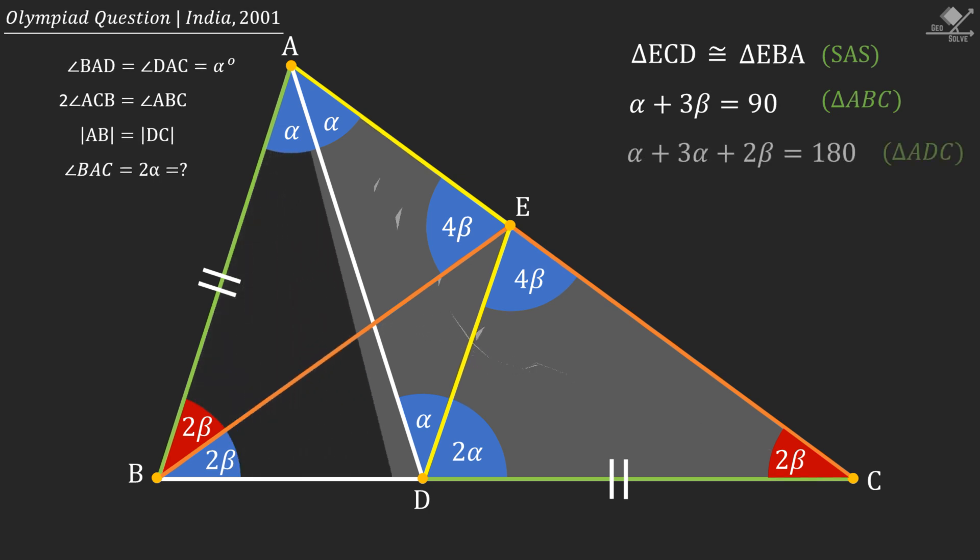From triangle ADC, we can write α + 3α + 2β = 180. And that will simplify to 2α + β = 90.